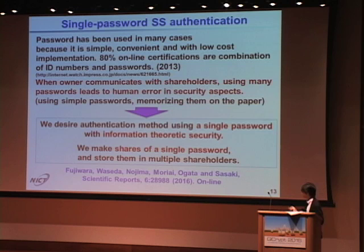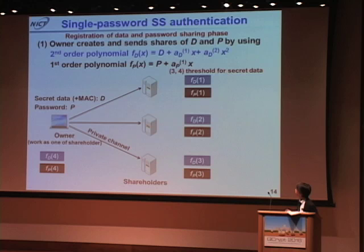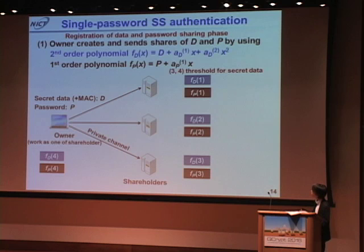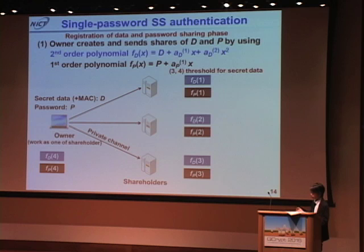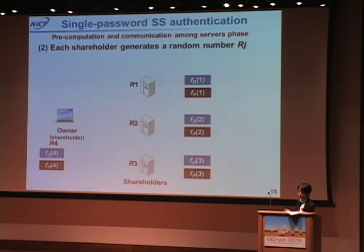To realize this, we make a share of a single password and store them in multiple shareholders. In the three-out-of-four threshold scheme shown here, at the registration and data sharing phase, the data owner creates and sends shares of the secret data and password using a second-order polynomial for secret data and a first-order polynomial for the password.